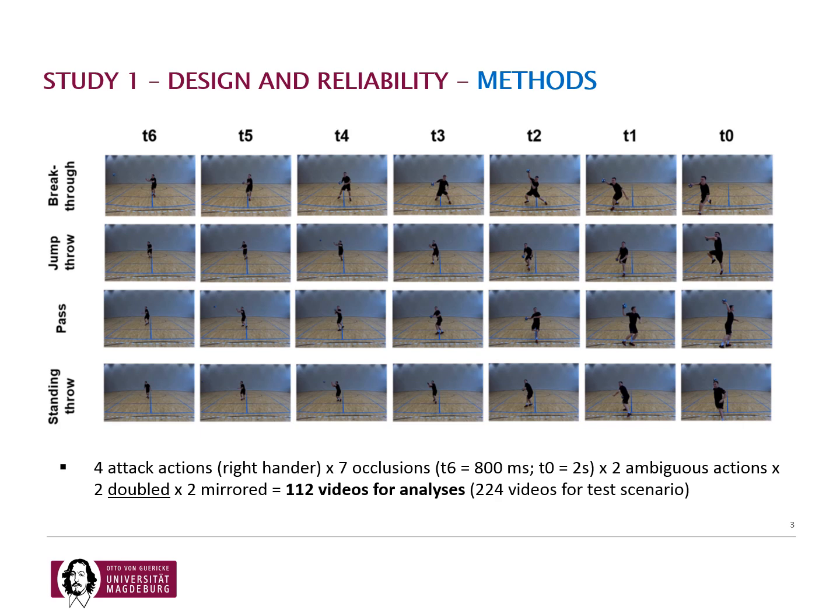The first study in the project was about the test design and reliability analysis of the test. We created a video scenario consisting of four attack actions showing a right-hander executing four different attack actions: a breakthrough, a jump throw, a pass, and a standing throw. These four attack actions were occluded at different time points with a time interval of 200 milliseconds. Video sequences with diffused information were at T6, and video sequences with full information were at T0.